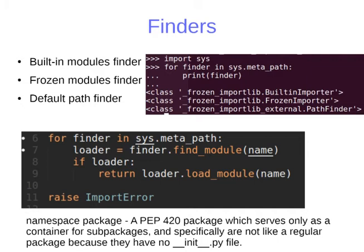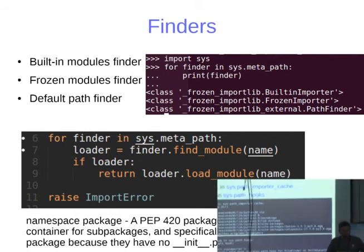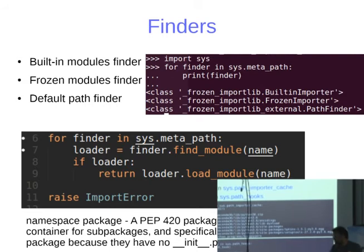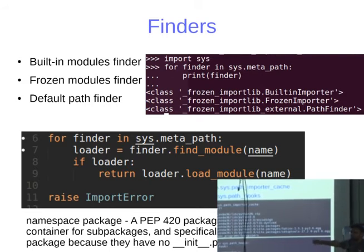Once sys.meta_path finders return nothing, you get into the path hooks. The path importer cache caches directories already looked at — if it's already there, it uses the cached file finder without rescanning. If not, it goes to sys.path hooks. There are two of them: zip importer and file finder. In Python 3 you can even import a package that's completely wrapped in a zip file. The file finder goes through all elements in sys.path, and if it finds the module, it returns it.